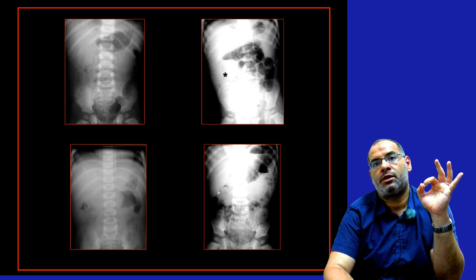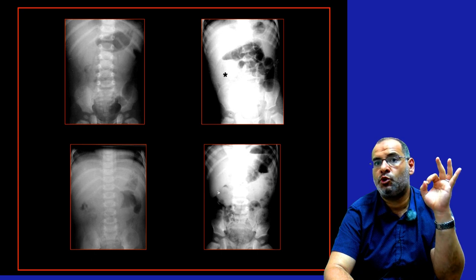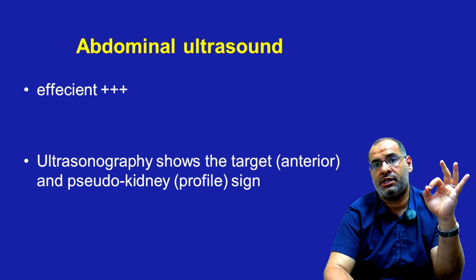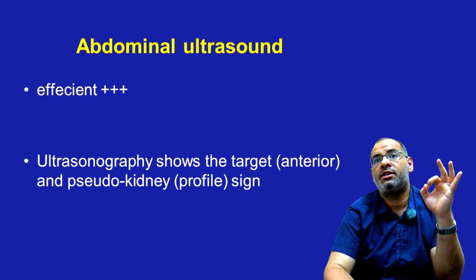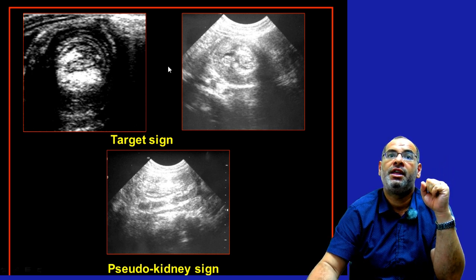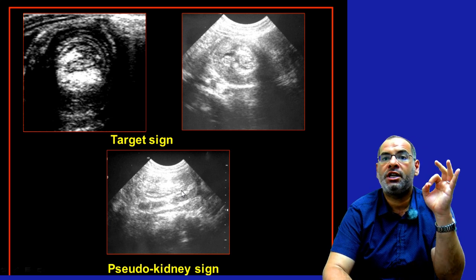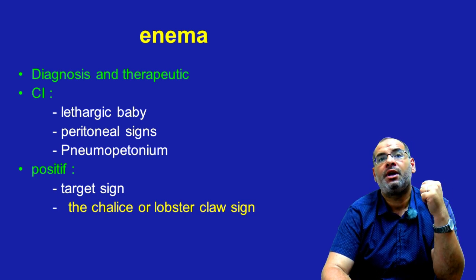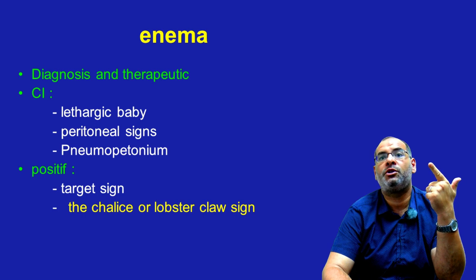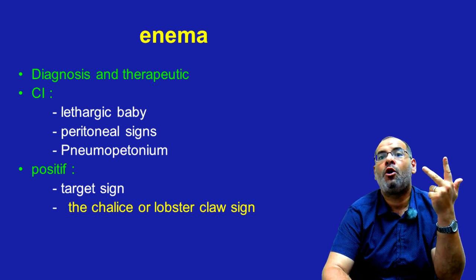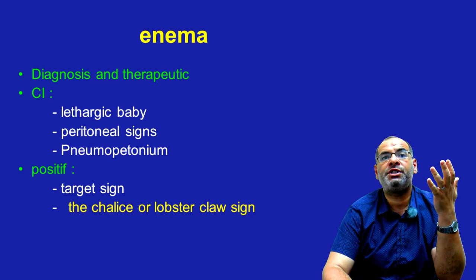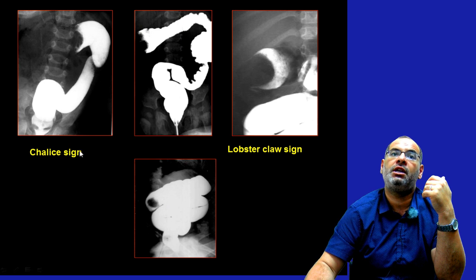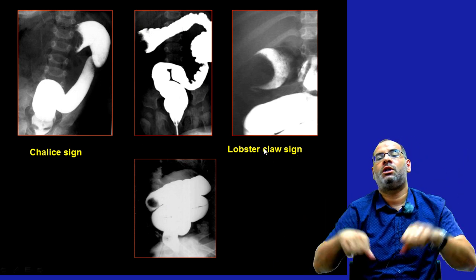Ultrasonography can show the target sign or the pseudokidney sign. Remember: ultrasound is very efficient in the diagnosis of intussusception with these two signs. The enema can be done for diagnosis but also for therapeutic purposes. It is contraindicated in cases of a lethargic baby, peritoneal signs, or presence of pneumoperitoneum. It is positive when it shows a target sign, coils sign, or lobster claw sign.